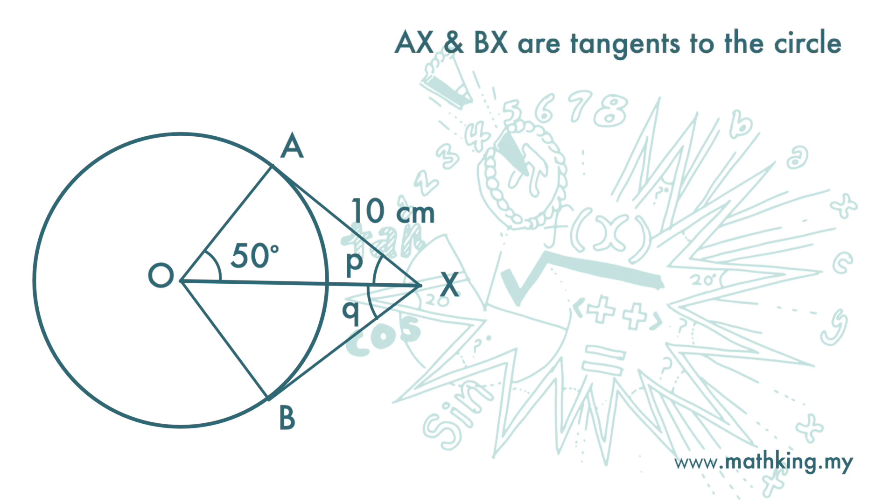AX and BX are tangents to this circle. Part A: Find the radius of the circle. Part B: Find angle P and Q.